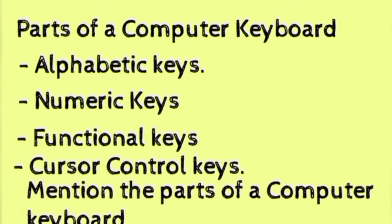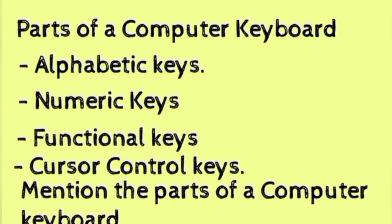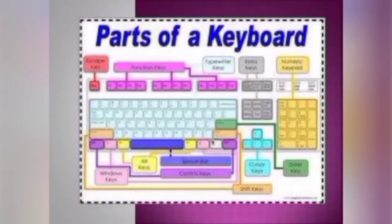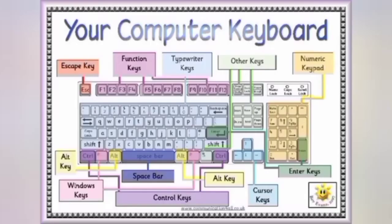The alphabetic keys are arranged in rows from letters A to Z on the keyboard. They are used for entering text into text editors such as Notepad, Wordpad, and Microsoft Word. The numeric keys consist of keys having figures from 0 to 9 and other keys such as Plus, Minus, and the rest. They are used for typing figures into the computer.